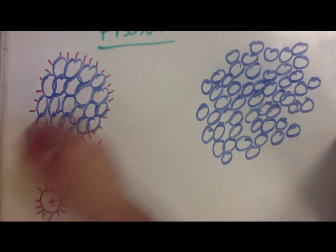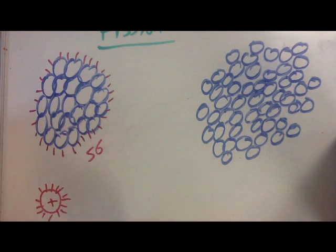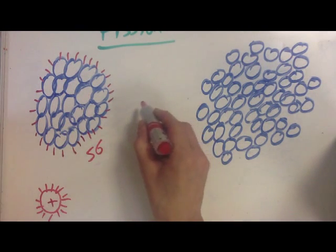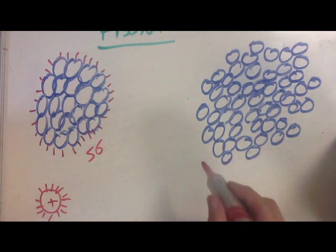We get mass deficit going this way. At iron, at this magic number 56, something special happens. As we make this bigger, as we try to fuse this together to make larger elements, larger nuclei like this...